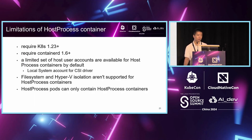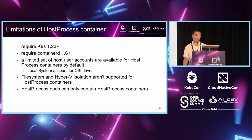Here are a few limitations of the host process container. It requires Kubernetes 1.23 or later. It requires containerd 1.6 or later. A limited set of host user accounts are available — for the CSI driver we need the local system account because we need to perform storage operations using these accounts. Also, some isolation such as file system isolation, IPv6 isolation, and Windows Registry isolation are not supported for the host process container. Additionally, host process pods can only contain host process containers.